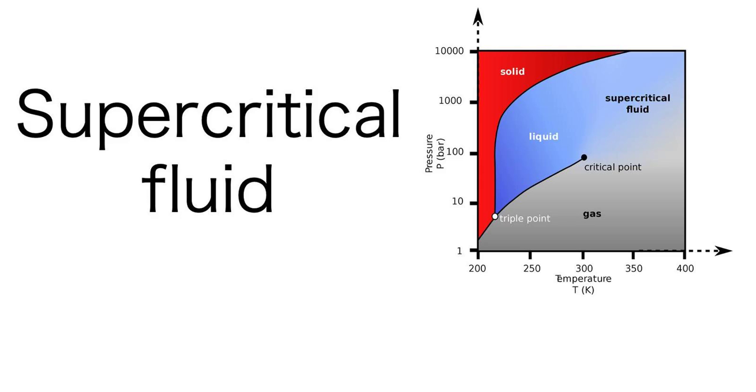Supercritical fluids occur in the atmospheres of the gas giants Jupiter and Saturn, the terrestrial planet Venus, and probably in those of the ice giants Uranus and Neptune.